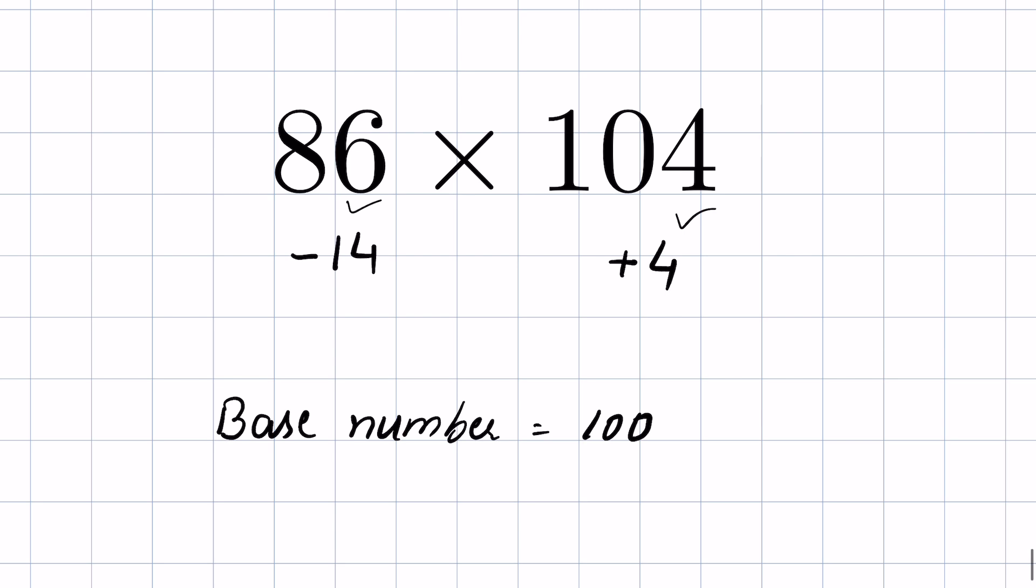If you diagonally add 4 to 86, because it's positive 4, then it will be 90. Or if you subtract 14 from 104, then also it will be 90, because it's negative 14, that's why we are subtracting. It's positive 4, that's why we are adding.